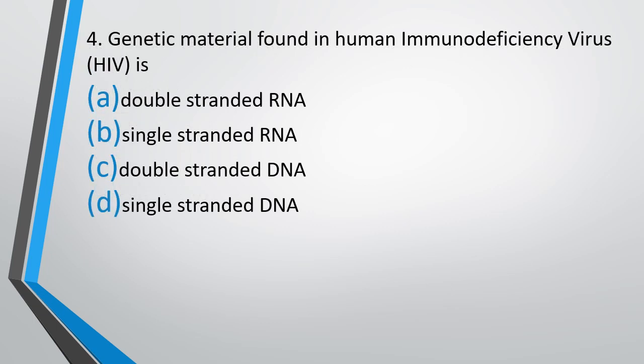Question No. 4: Genetic material found in human immunodeficiency virus is double-stranded RNA, single-stranded RNA, double-stranded DNA, or single-stranded DNA. The correct answer is option B, single-stranded RNA.